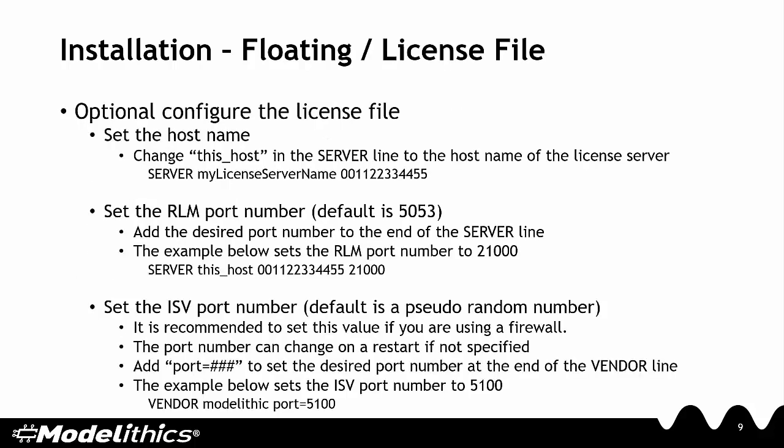By default, the floating license you receive from Modellytics uses the server name this_host. The default RLM license server port is 5053. To configure the license file, you need to change this_host in the server line to the host name of the license server. You can set the RLM port number by adding the desired port number to the end of the server line. As an example, you can see the RLM port number is set to 21000. You can also set the ISV or vendor port number — it's recommended to do this if you're using a firewall, as the port number can change on a restart if not specified. To set the port number, add port equals the desired port number at the end of the vendor line. Shown here is an example in which the ISV port number is set to 5100.